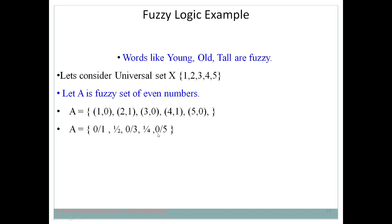Another representation of the fuzzy set uses a numerator and denominator notation. The numerator represents the degree of membership and the denominator represents the element: 0/1 + 1/2 + 0/3 + 1/4 + 0/5. So 1 is not even (0), 2 is even (1), 3 is not even (0), 4 is even (1), 5 is not even (0).